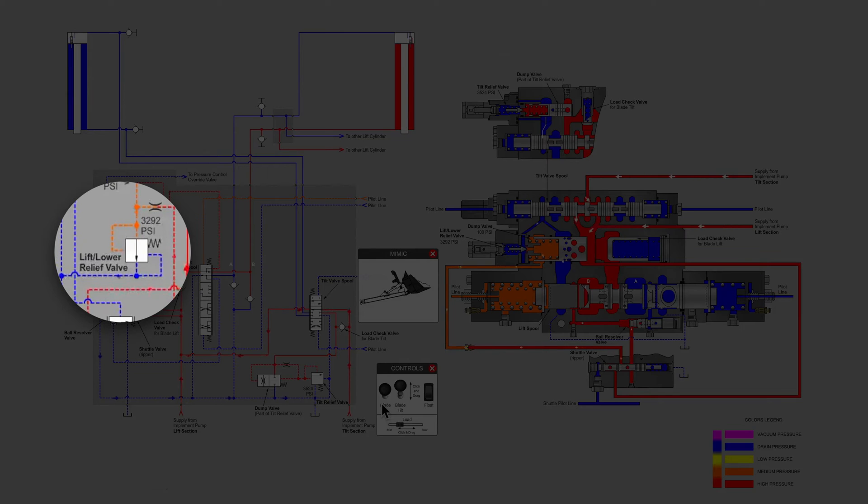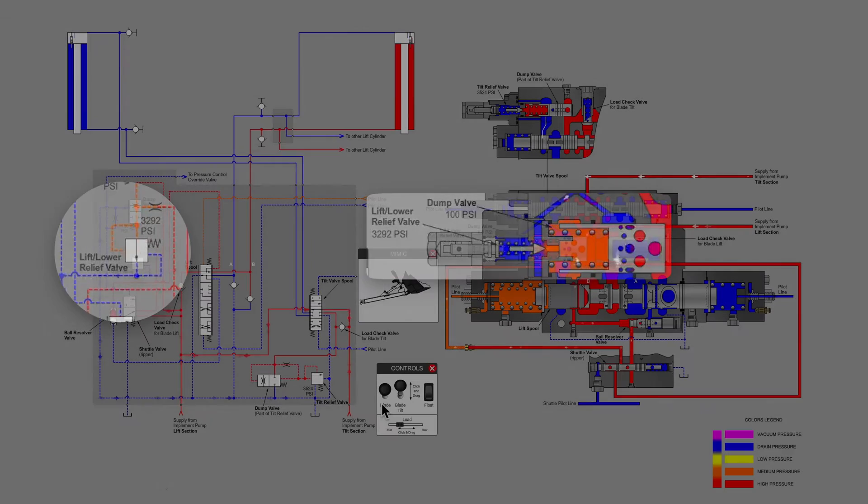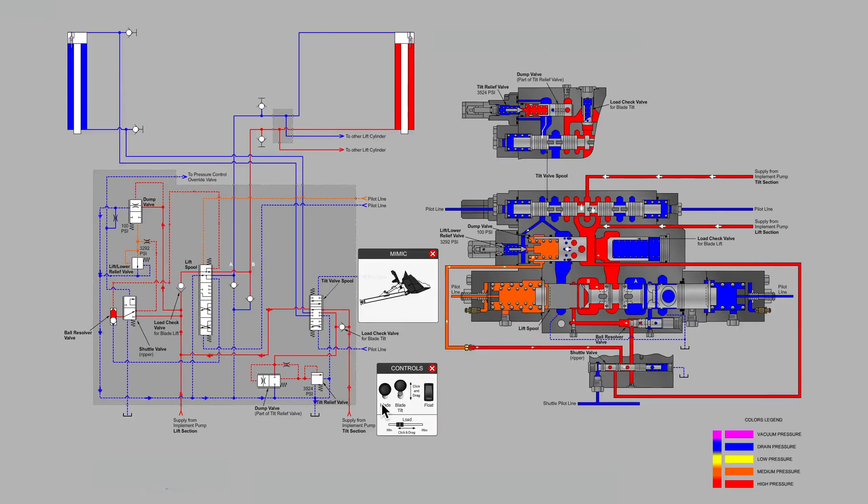Then we will see that the lift lower relief valve has a small pilot flow passing through it. You can see it both on the symbol side and over on the right on the cutaway. And that small flow that is passing through unbalances the dump valve poppet and moves it to a position that is open enough to direct pump flow back to tank while holding our maximum system pressure.